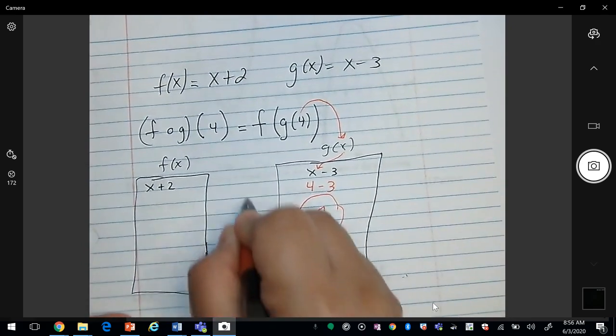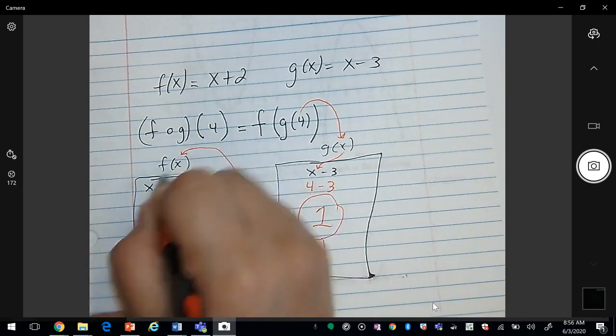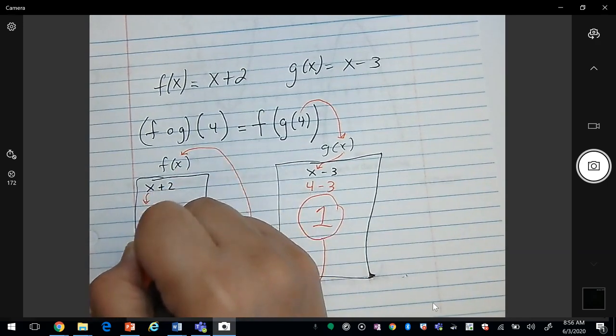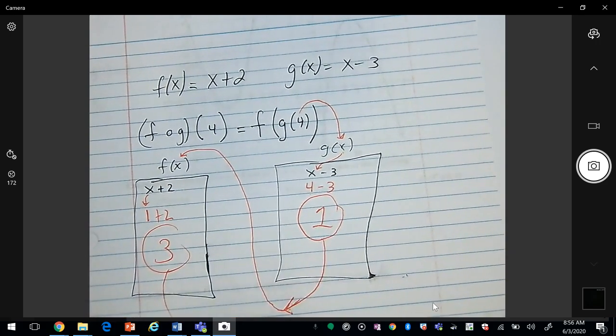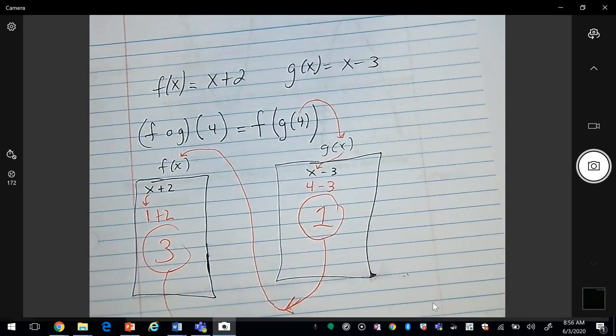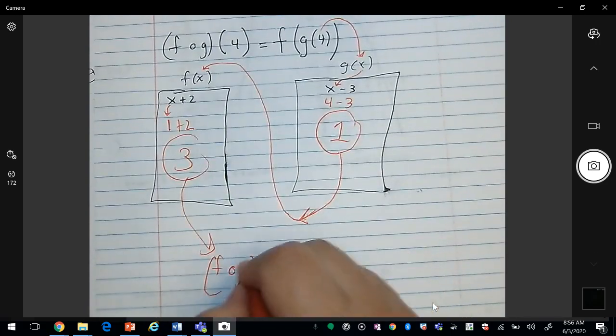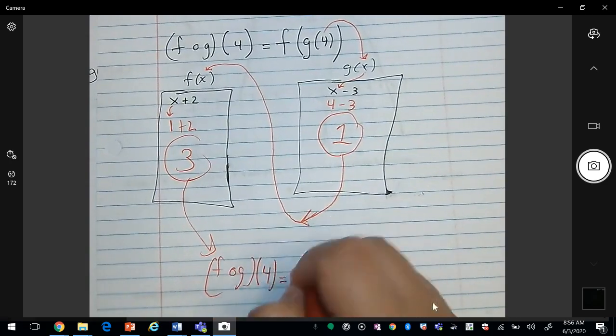So it comes around, it looks for the x, and wherever you see the x, we replace the 1. And then this will give us the final answer, which is the composition is equal to 3.